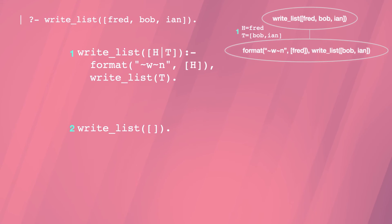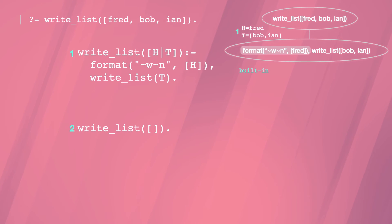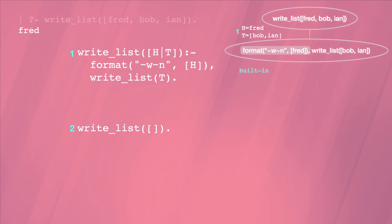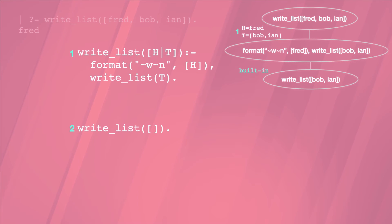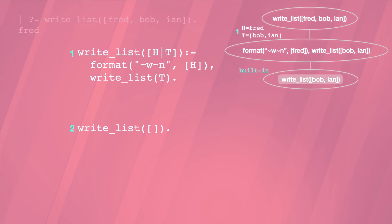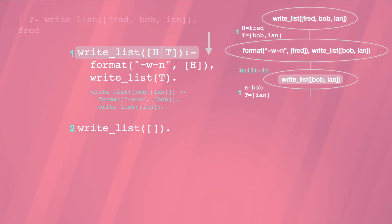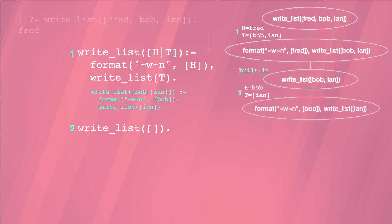Prolog does these in order, so the first is format. This is built in so it succeeds, producing output as a side effect. There's now one right-list goal left, but we've reduced the starting length of 3 to 2. This pattern repeats, searching from the top, successfully matching and producing new goals.